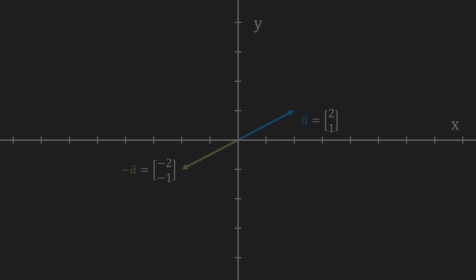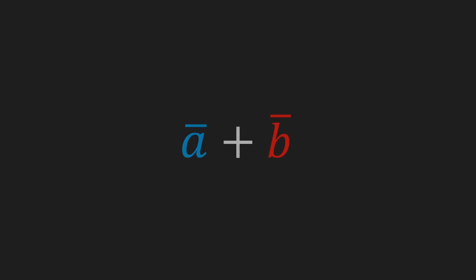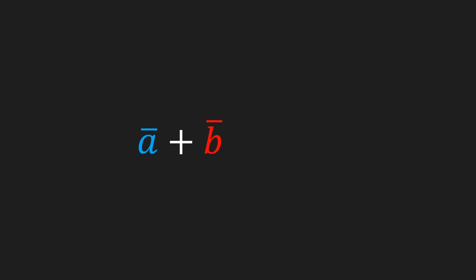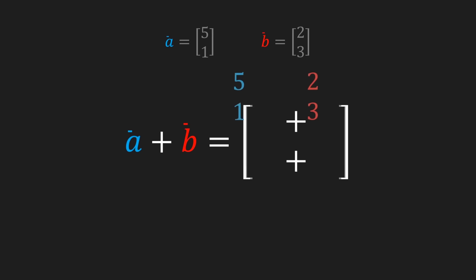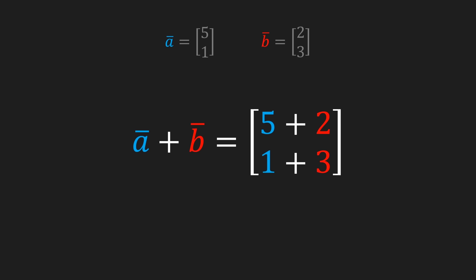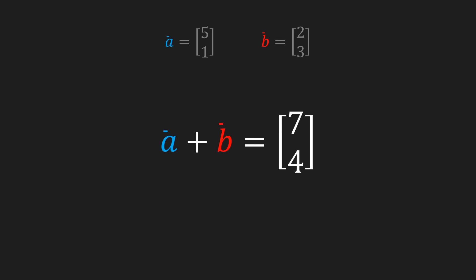Now that we know what scalar operations are, let's move on to vector operations, which are operations between two vectors. This could be either an addition or a subtraction. I'm gonna continue to explain vector addition, but once again vector subtraction is completely analogous. To calculate the sum of two vectors we just calculate the sum of their x components and the sum of their y components. As an example I'm gonna take two vectors a and b. I'll fill in their values in our formula and now we can calculate the sum of a and b.